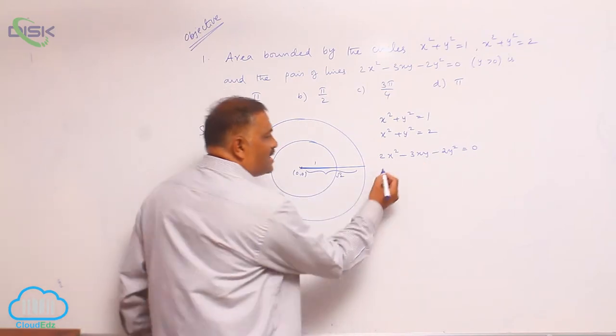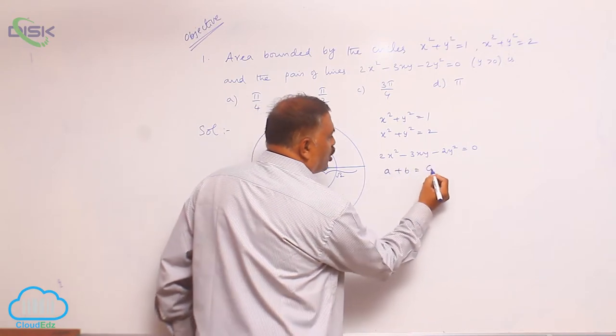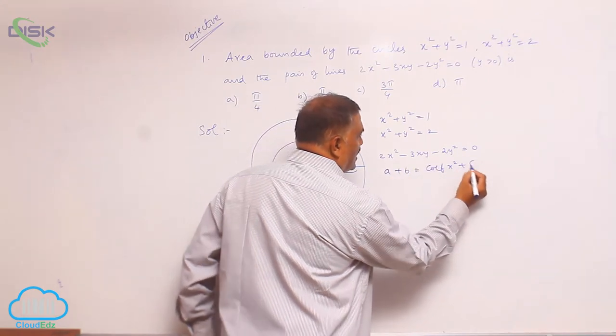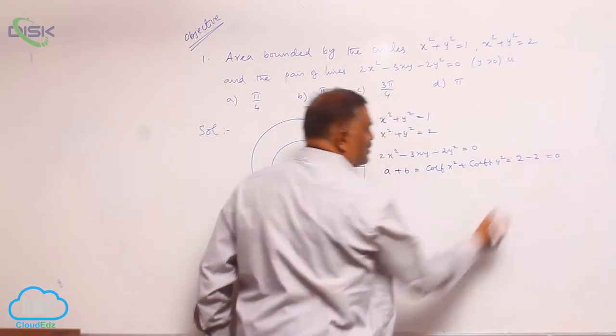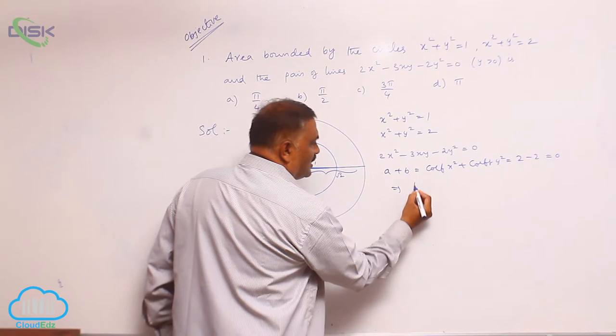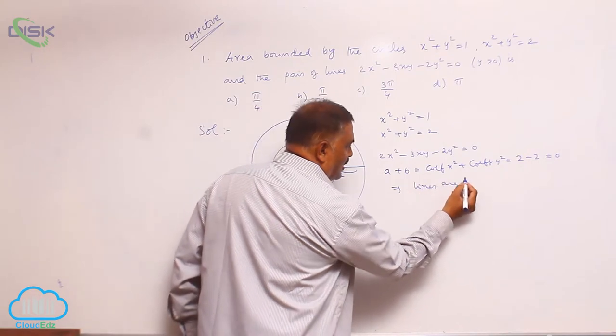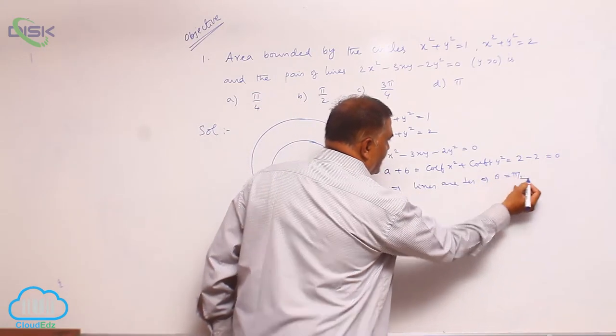And further, a plus b - that is coefficient of x square plus coefficient of y square - equal to 2 minus 2 equal to 0, implies the lines are perpendicular. That means angle between them is 90 degrees.